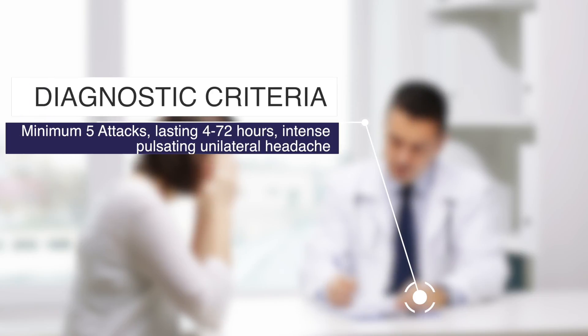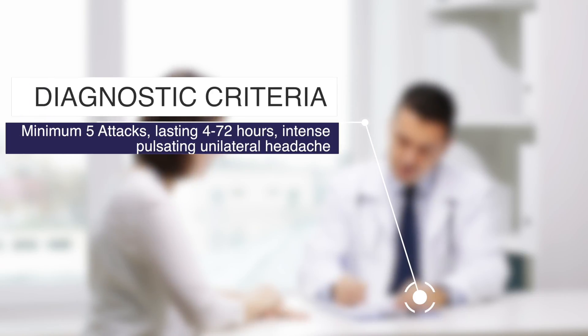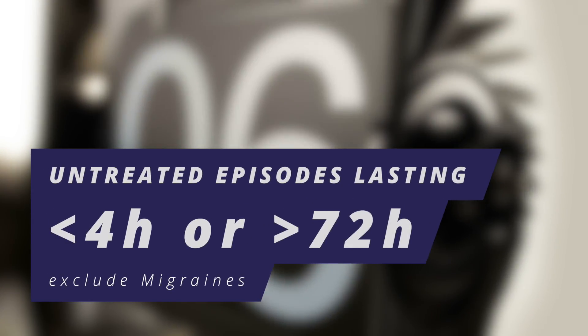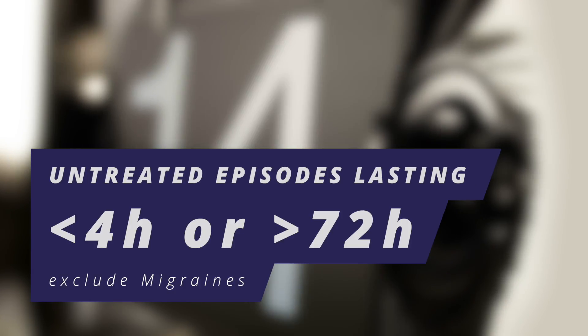In order for a headache to qualify as migraines, it has to fulfill certain criteria. There have to have been a minimum of five attacks, each lasting from 4 to 72 hours of intense, pulsating headache that manifests itself on one side and one side only. The duration is an essential characteristic, because if an untreated episode lasts less than 4 or more than 72 hours, migraines are excluded.